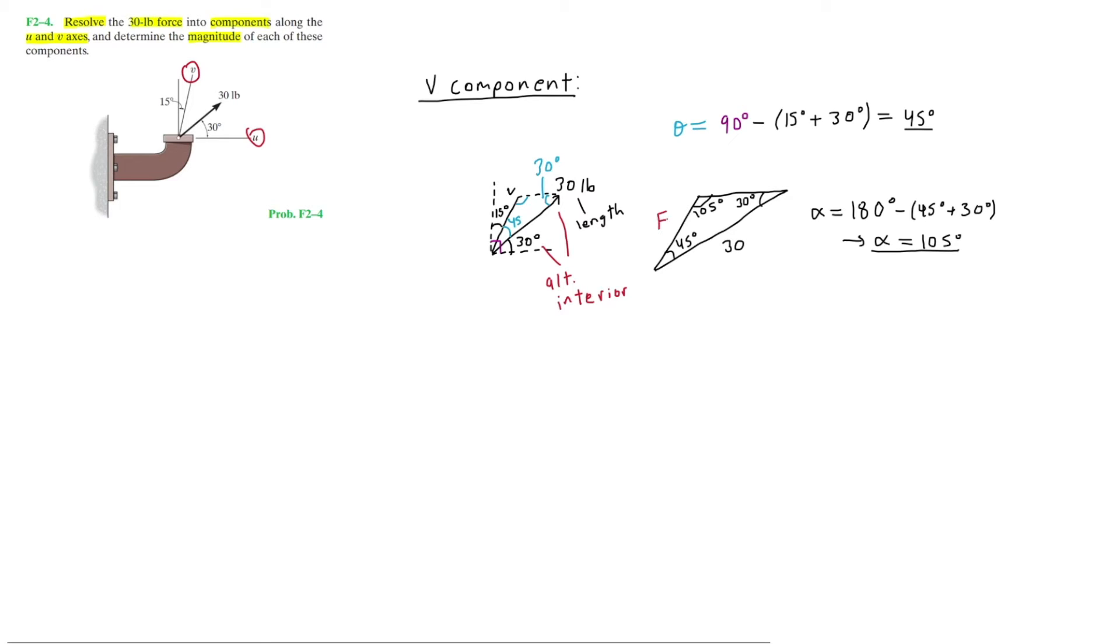Now we have all the angles inside this triangle. Here we can see that we know one length of this triangle and we know all three angles. Hence we can go ahead and simply use the sine law to find FV. From the sine law we have FV divided by the sine of the angle corresponding across from it, which is the 30 degrees. This equals the length 30 divided by the sine of the angle across from the 30, which is 105 degrees in this case.